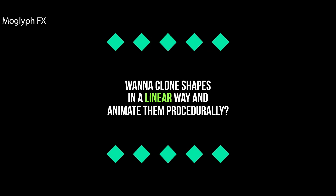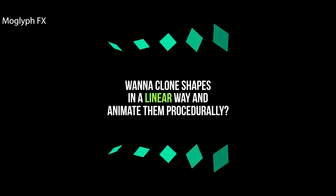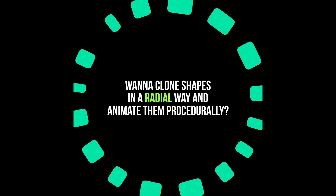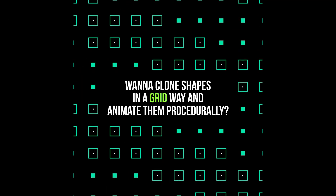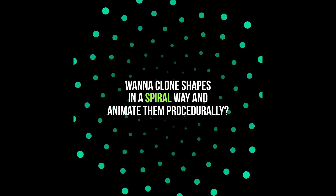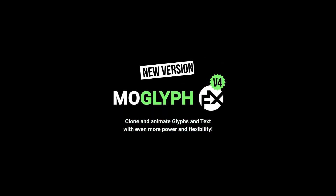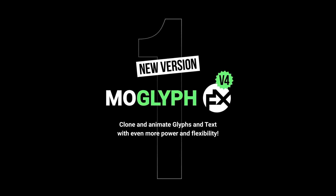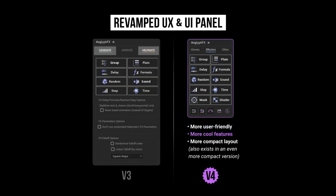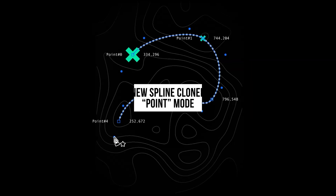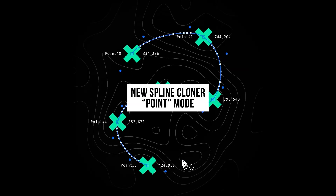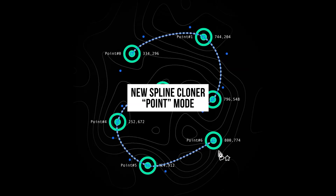Moglyph FX4 is a procedural motion graphics toolkit that lets you clone and animate glyph shapes or text inside a single text layer using Cinema 4D style cloners and effectors. It includes multiple cloner types like spline, grid, radial, spiral, brick, and much more. Falloff-driven effectors for sequential, random, audio, mask, and shader-based animation, plus a large library of themed glyph fonts and demo projects.